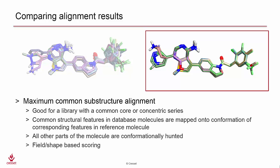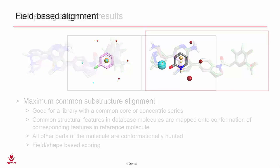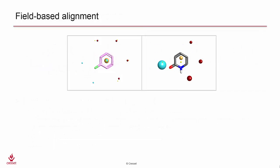Let's explore how these alignment algorithms work. In field-based alignment, each conformation of the comparison molecule is subjected to a rigid body comparison to the reference, which is also rigid.